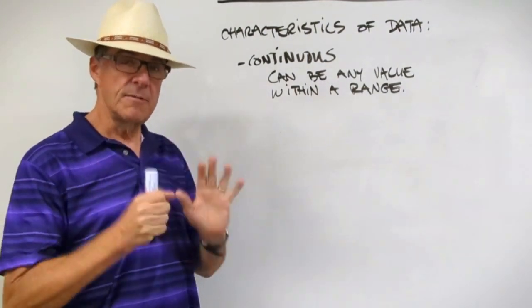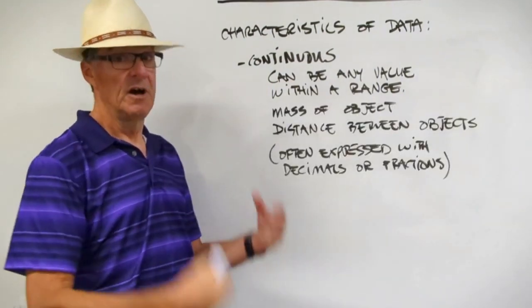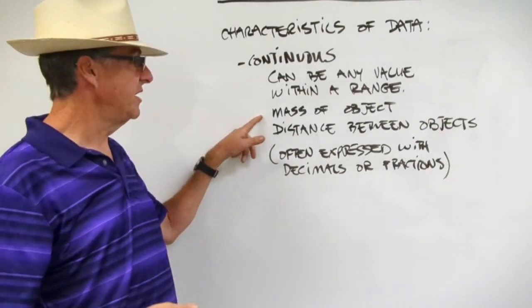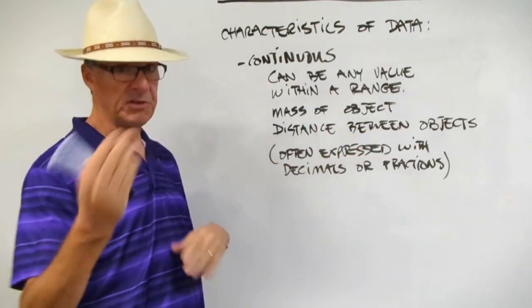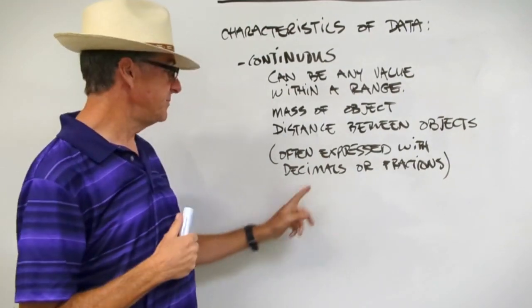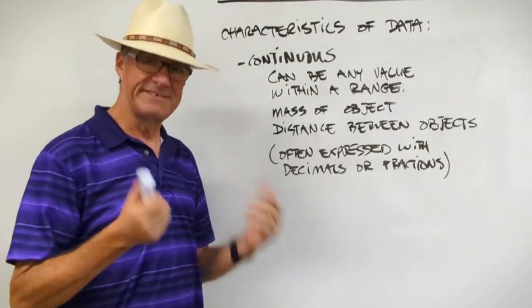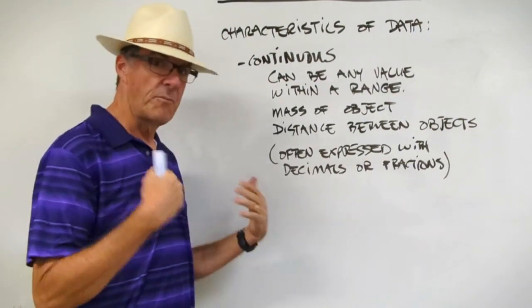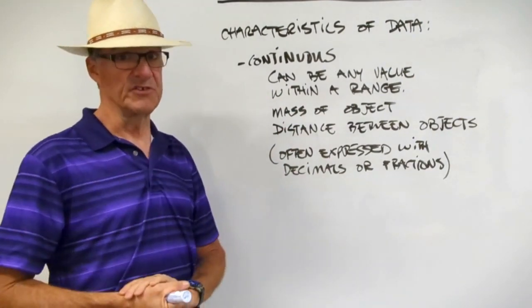Think about for a minute, come up with two other types of continuous data. Here's what I came up with. Undoubtedly you probably came up with a couple other things. The mass of an object, that's continuous data, and the distance between two objects, like my two fingers or the distance between Pluto and Mars, something like that. One thing to recognize is that continuous data is often expressed with decimals or fractions. And that makes sense because you can't have a fraction of a person, that's discrete data. You can't have a fraction of a pet because that's discrete data. So continuous data has decimals and fractions quite often.